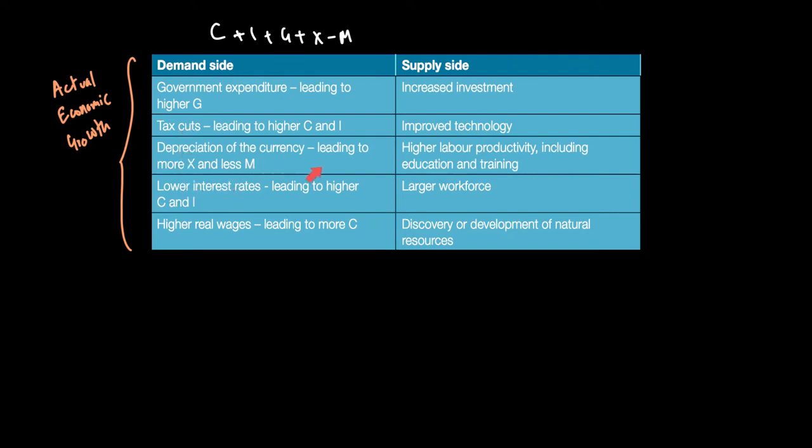Similarly, depreciation of the currency, where we lower our exchange rate, can lead to exports becoming cheaper and imports becoming expensive. That can also cause X minus M to go up, which in turn will make the AD curve shift to the right and therefore GDP to go up.